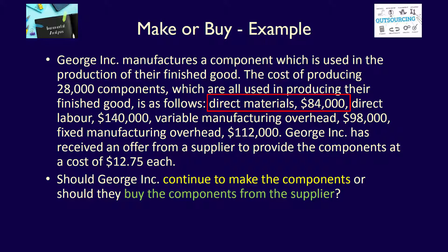The direct materials to make the component are $84,000. If we buy the 28,000 units from the supplier, we'll incur no direct material costs. If we decide to make the 28,000 in-house, we incur $84,000 in costs. This cost changes between alternatives and it's a future cost. The direct labor costs are also incurred to make the component, $140,000. If we buy the component from a supplier, we'll incur no direct labor costs. This cost changes between alternatives and it's a future cost.